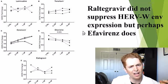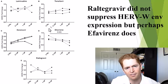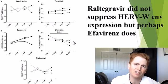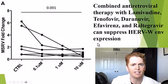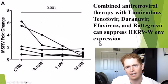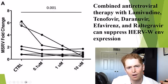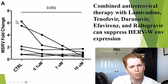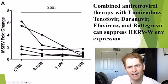It should be noted that raltegravir and many other antiretroviral drugs don't really suppress HERV-W envelope expression even in cell culture. Perhaps efavirenz does a little bit. These are HIV drugs — they're not really targeted against HERV-W, even though they share a lot of the same proteins. A study combining multiple antiretroviral drugs in cell culture — lamivudine, tenofovir, darunavir, efavirenz, and raltegravir — does seem to suppress HERV-W envelope expression a little bit, but really only in people who had higher levels at baseline.